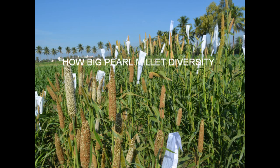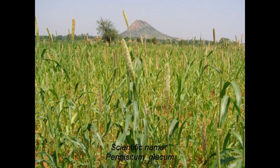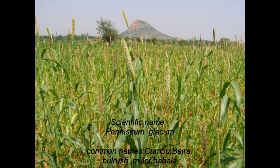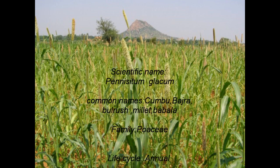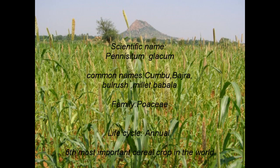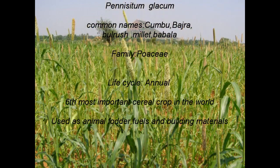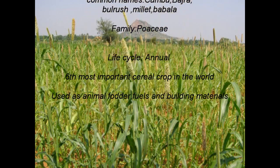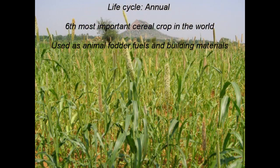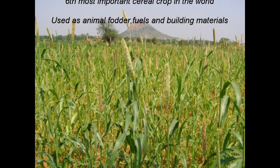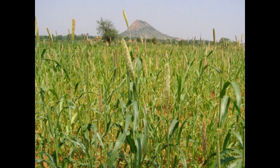Pearl millet's scientific name is Pennisetum glaucum. The common names of pearl millet are kombu, bajra, bulrush, millet, and babala. The family of pearl millet is Poaceae. The life cycle of pearl millet is annual.